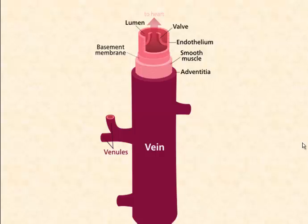Veins are thin-walled and less muscular than arteries. Valves ensure one-way flow of blood by preventing backflow. All veins, except for the pulmonary vein, eventually connect with the superior and inferior vena cava, allowing blood to return to the right side of the heart.